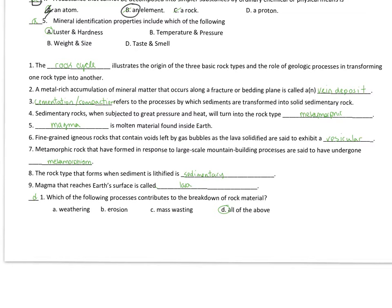A metal-rich accumulation of mineral matter that occurs along a fracture or bedding plane is called a vein deposit. We mentioned it very lightly. I wouldn't stress that one. Cementation and compaction. Another word you could use there is sedimentation or lithification. These are all good words referred to the process by which sediments are transformed into solid sedimentary rock.